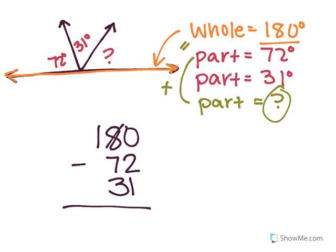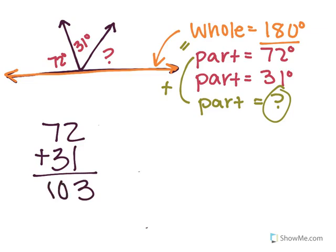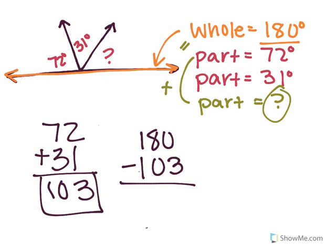So if I was to do it this way, ungroup, this 8 becomes a 7. I bring the 10 over here. 10 minus 2 is 8, minus 1 is 7. Oh wait, nope, this is not going to work. Never mind. The best way is to combine it before. My bad, guys, I wasn't even thinking. Okay, so I'm going to combine these. I get 3, 7 plus 3 is 103. So I'm going to take 180 and I'm going to subtract 103 to find the missing part.